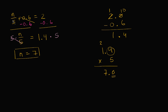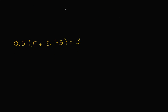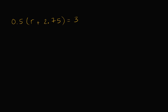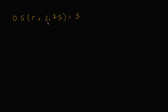You can verify this works because 7 divided by 5 is 1.4, and 1.4 plus 0.6 is equal to 2. Let's do one more example — this is too much fun! 0.5 times the whole quantity (r plus 2.75) is equal to 3.